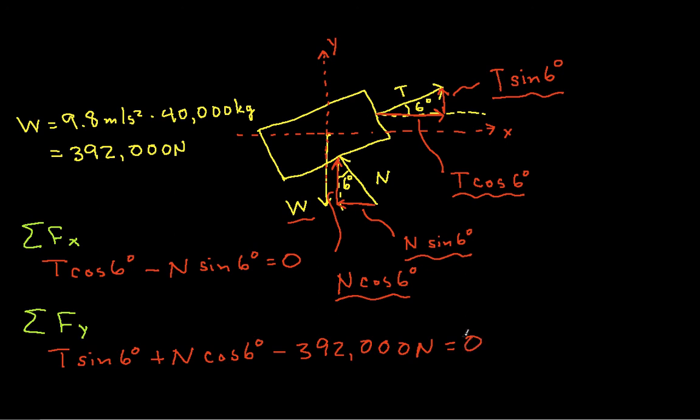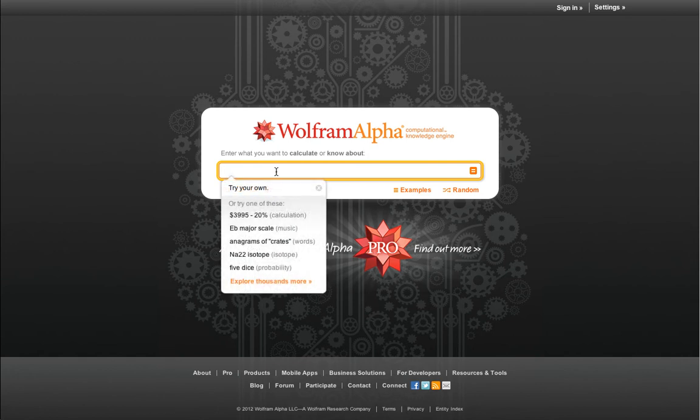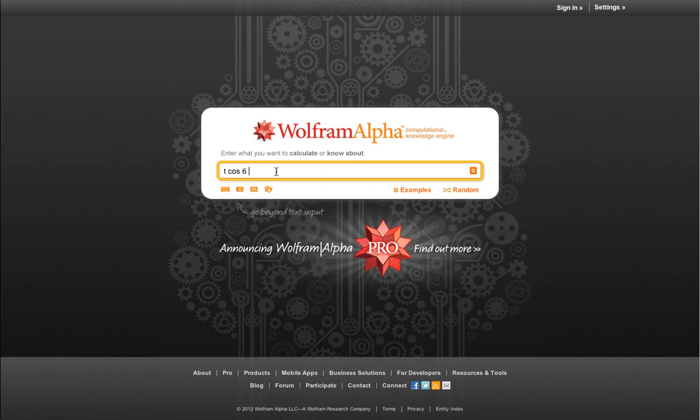So we have a system of equations and two unknowns. And you can now apply your favorite approach to solving a system of two equations and two unknowns. I'm going to take what for me is the absolute easiest path, which is to use Wolfram Alpha. So I have my variable T times cosine of 6 degrees, minus my variable N times sine of 6 degrees, equals 0. And T sine of 6 degrees, plus N cosine 6 degrees, minus the weight, which is 392,000 equals 0. And I tell Wolfram Alpha to solve that.